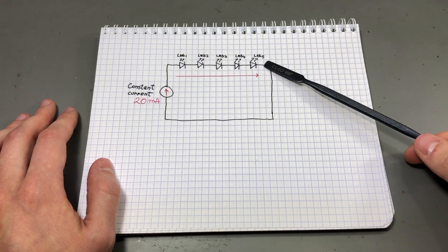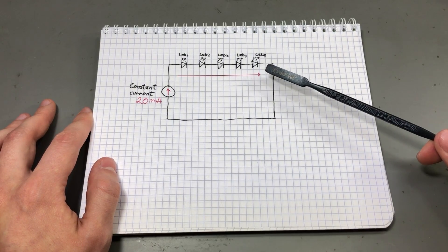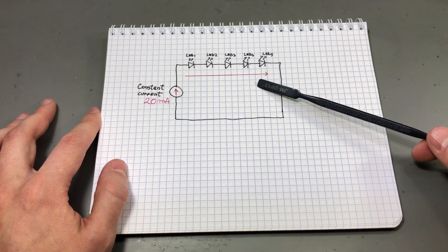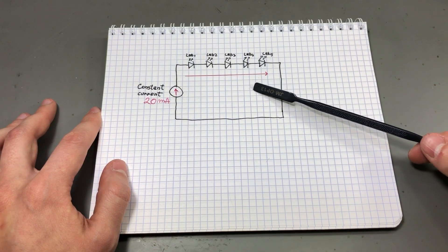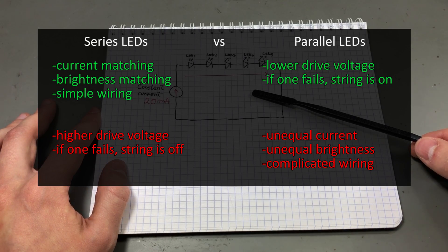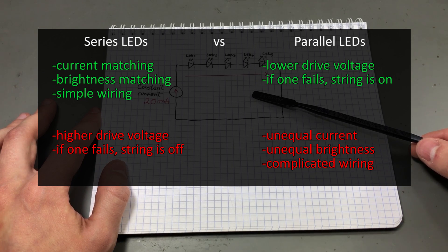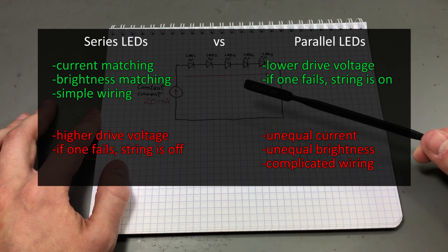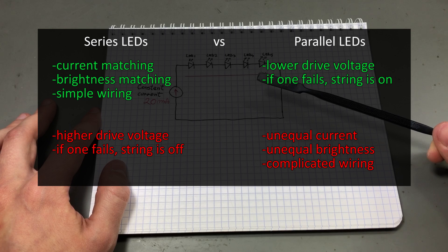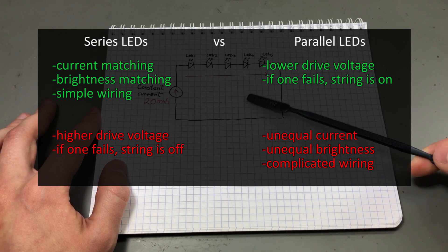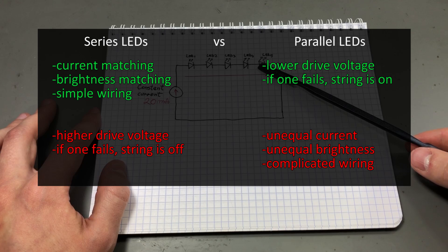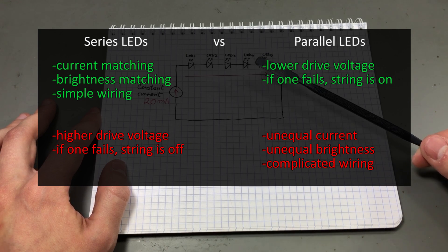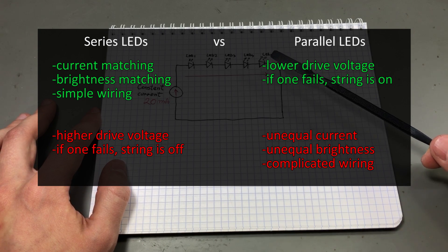So in the end of this video let's review the advantages and disadvantages of wiring LEDs in series versus parallel. In series we have current matching, each LED will get the same current. We have brightness matching as a result. We will get even brightness across the entire string. We have simpler wiring, it doesn't matter if you are wiring them directly or if you use a PCB it will be simpler to connect them in series.